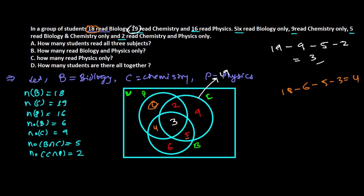Now we can fill the remaining section of the physics circle. Total physics learners are 16. We have already placed 4 (biology and physics only), 3 (all three), and 2 (chemistry and physics only). So 16 minus 4 minus 3 minus 2 equals 7. There are 7 students who learn physics only.